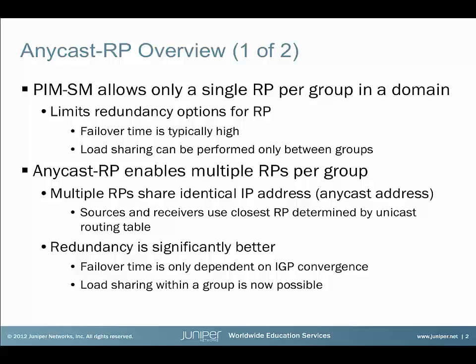This requirement ensures that source and receiver always use the same RP so that they can connect through it. A single RP per multicast group creates a single point of failure, which is something to avoid in a correctly designed network. A single RP also limits options for load balancing in the case of high-volume groups. To allow load balancing within a group and to increase network resiliency, Anycast RP was developed.